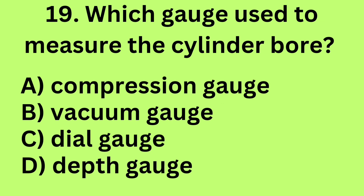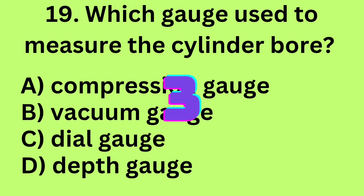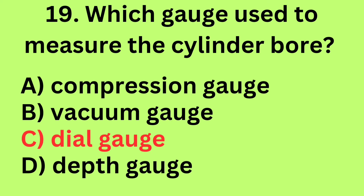Question 19: Which gauge is used to measure the cylinder bore? A. Compression gauge, B. Vacuum gauge, C. Dial gauge, D. Depth gauge. Answer: C. Dial gauge.